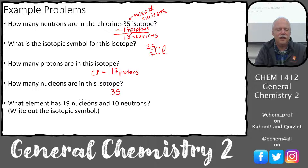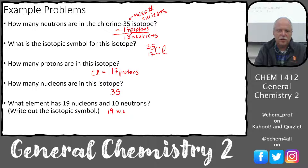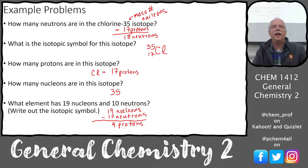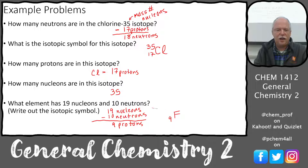What element has 19 nucleons and 10 neutrons? Nucleons are neutrons plus protons, so 19 minus 10 equals 9 protons. Going to the periodic table, element 9 is fluorine. So the isotopic symbol is fluorine with 19 as the superscript — fluorine-19. It's like a puzzle: with any two pieces of information you can find the third.